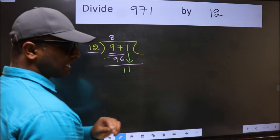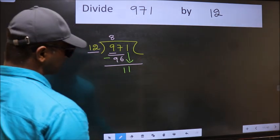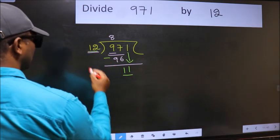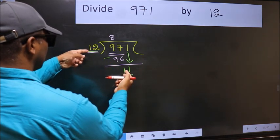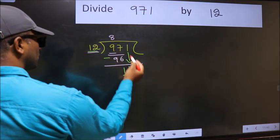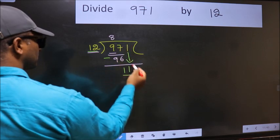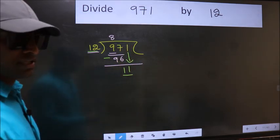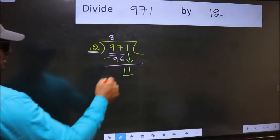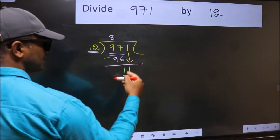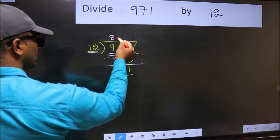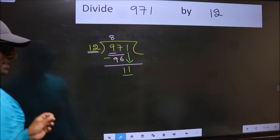And the mistake is this: Here we have 11 and here 12. 11 is smaller than 12. So what many do is they directly place the decimal and take 0, which is wrong. Why is it wrong? Because just now we brought this number down, and in the same step, you want to place the decimal and take 0, which is wrong.